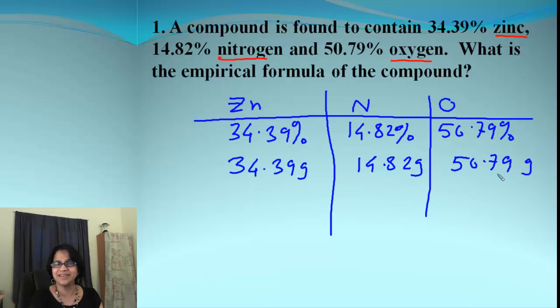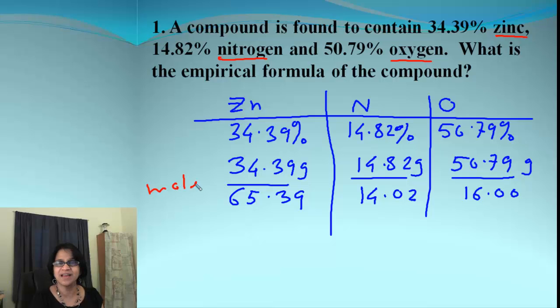Next thing which we have is mass to the moles. How do we get mass to moles? We are going to divide each of that by the molar mass for the compound. And for zinc it is 65.39. Nitrogen is 14.02. And oxygen is 16.00. Alright. So we got percent to the mass and mass to the moles.